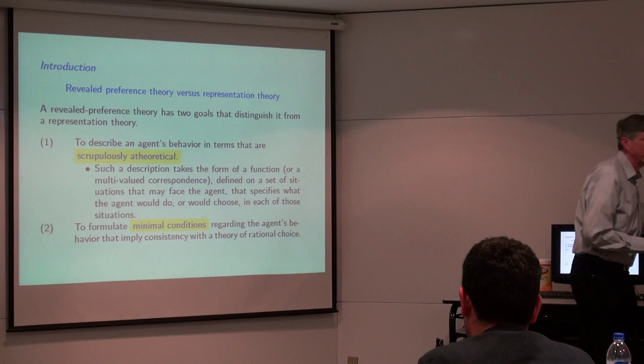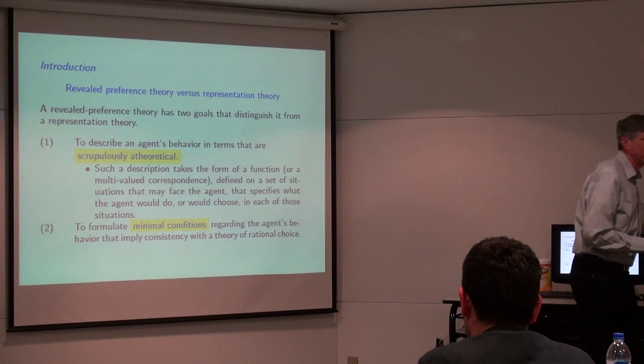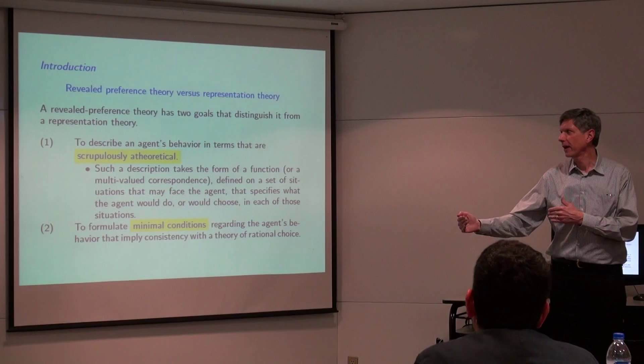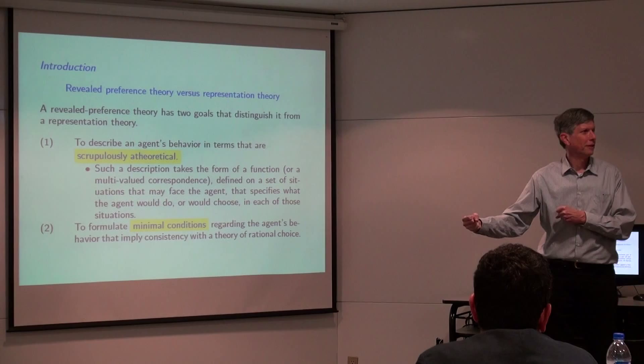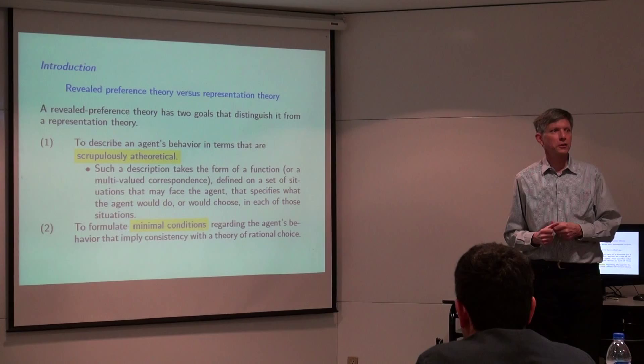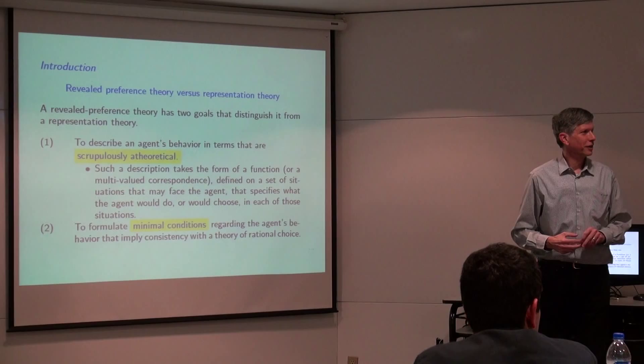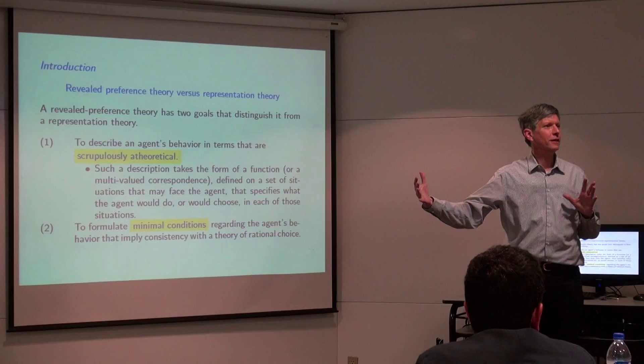Savage takes this example that he put in his book and claims to go straight from that example to his theory. The first thing he says is: you don't really understand what the act of cooking a two-egg omelet is, so let me tell you how to represent it. We have this Boolean field of events...